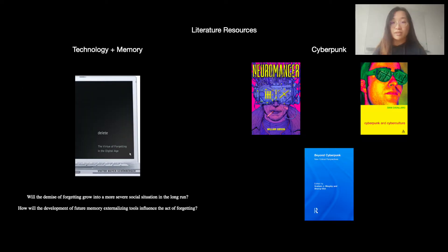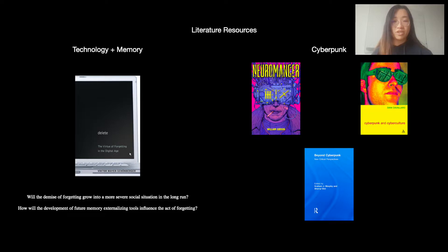I researched my literature resources from two main categories: technology and memory, and cyberpunk as a genre. In the first section, I study how technology and memory relate, especially how digital technologies prevent the natural process of forgetting by archiving everything we do. In 'Delete: The Virtue of Forgetting in the Digital Age' by Victor Mayer-Schönberger, I learned about the potential consequences of the demise of forgetting. His views on how modern technologies become a barrier for people to forget inspired me to ponder: will the demise of forgetting grow into a more severe social situation in the long run, and how will future memory externalization tools influence active forgetting?